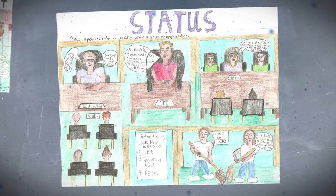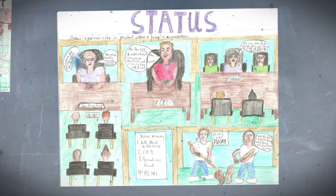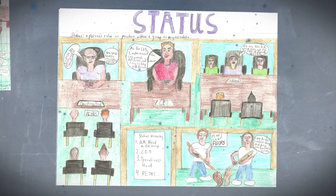Then the student picks a second and seemingly unrelated concept from the course. The more disparate the two concepts are, the better the activity is going to go. In the second step, the student again visualizes the concept bringing it to life in the same format that they chose for the first.